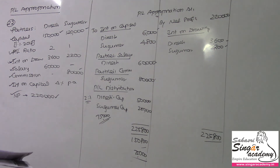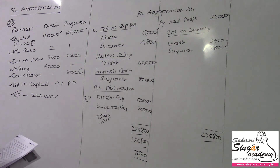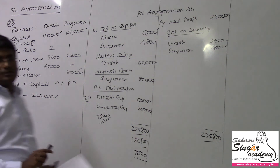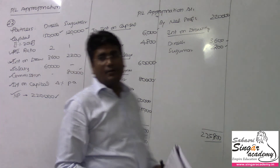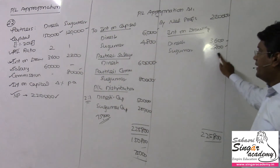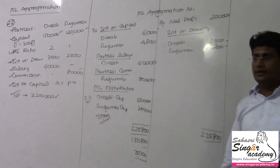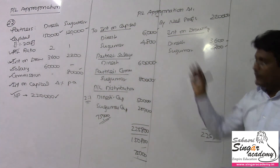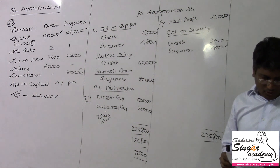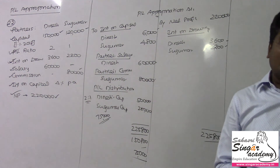Checking the totals: 140, 150, 225 — credit side 2 lakhs 25,800 — correct, so the answer is correct. Also noting a correction: Sugumar's interest on drawings is not 2,100 but 2,200. The 22nd illustration is now complete and we move on to the 23rd.